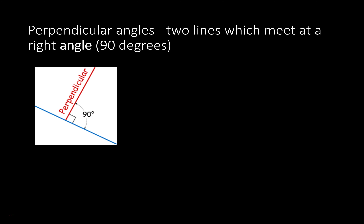Perpendicular lines are two lines which meet at a right angle — 90 degrees. It could be drawn perfectly like this where you draw the right angle symbol, or you might just draw it and put a 90-degree box there. Same thing.